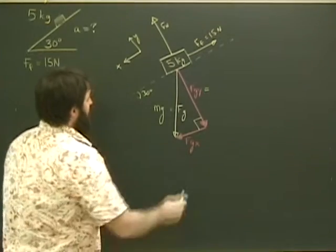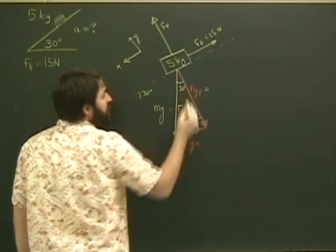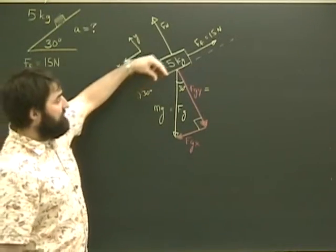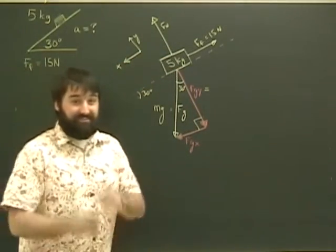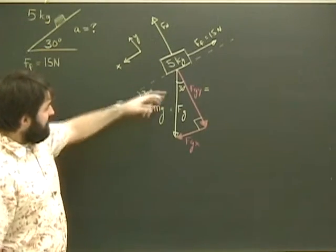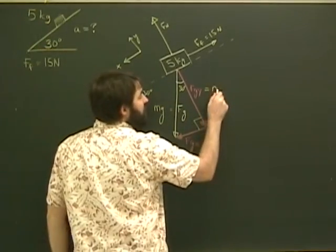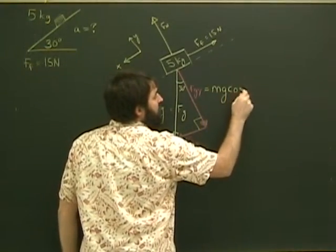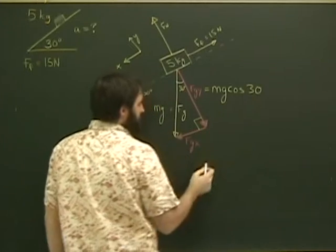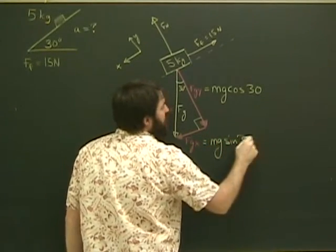So Fgy, this angle is 30 degrees. If the ramp is 30 degrees, this angle is 30 degrees. It always is. You can figure out why on your own hopefully. So Fgy, the sine of 30 would give us Fgx, so I'm going to use cos 30. So it will be mg cos 30. And Fgx therefore will be mg sine 30.